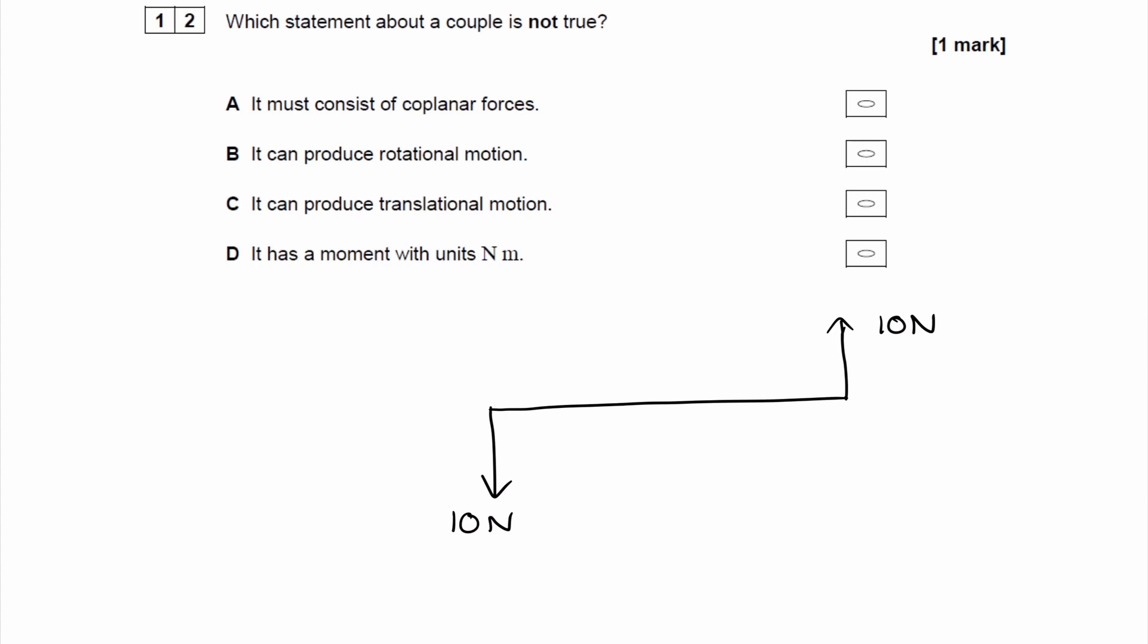Acting through the same point would be, for instance, if this force were over here. So if the scenario were this, then this wouldn't be a couple. You have equal and opposite forces, but because they act through the same point, it wouldn't be a couple.